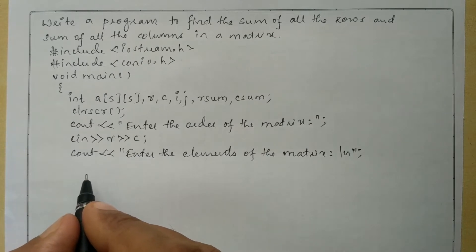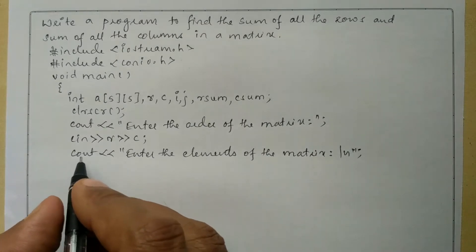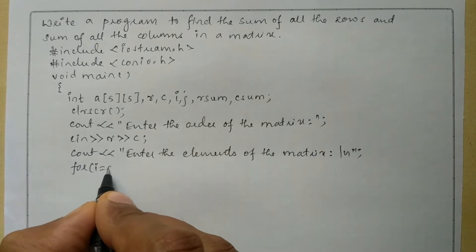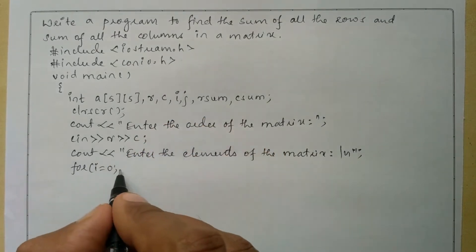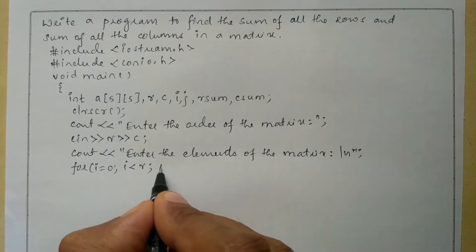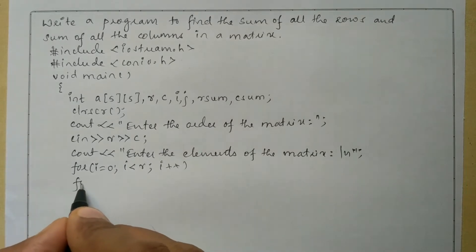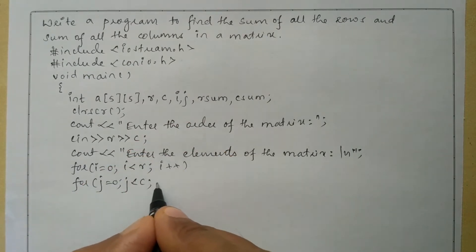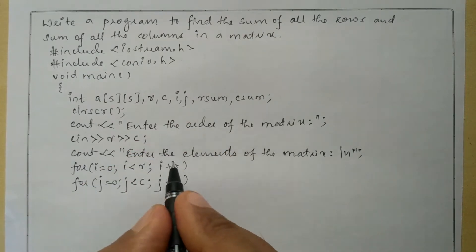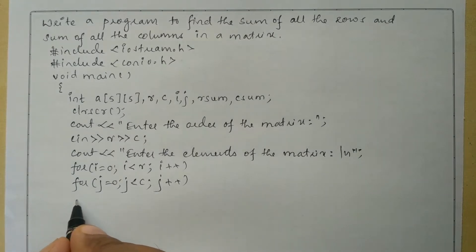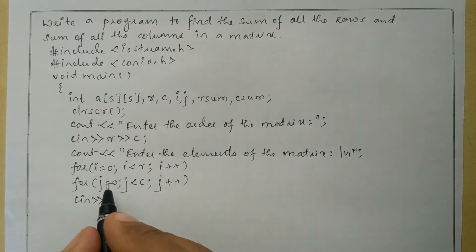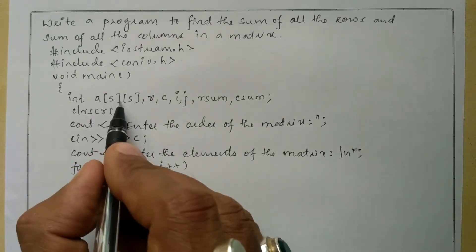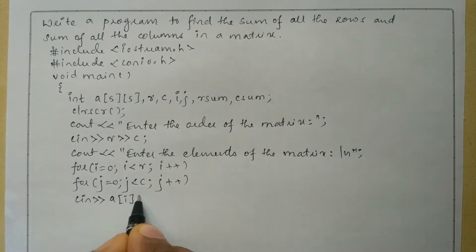In order to receive the elements one by one, we use nested for loops. The outer loop is: for i equals zero, i less than row, i plus plus. The inner loop is: for j equals zero, j less than column, j plus plus. Inside the inner loop we receive input from the user using cin with stream extraction operator into the two-dimensional array element a[i][j].